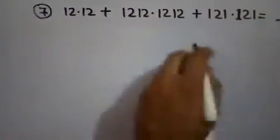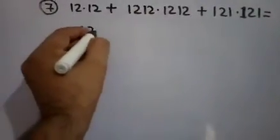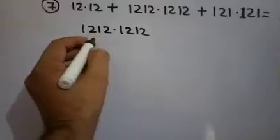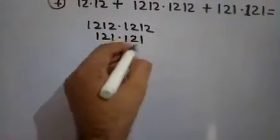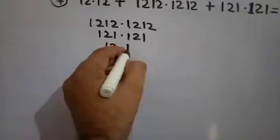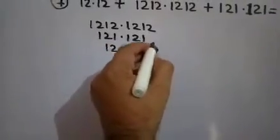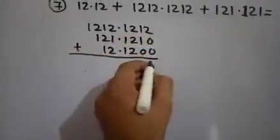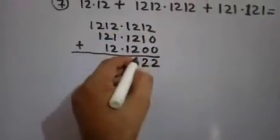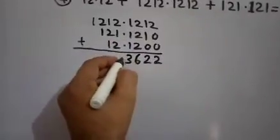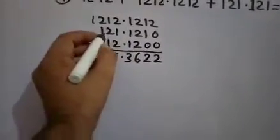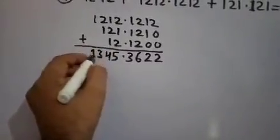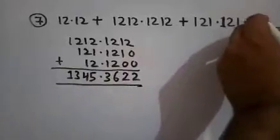Add all three decimal numbers. First, note down the larger number, then the smaller one, and the last lesser one. Now convert into like decimals and add them. This is two, this is six three point five, this is four, this is three, this is one — so one three four five will be the correct answer.